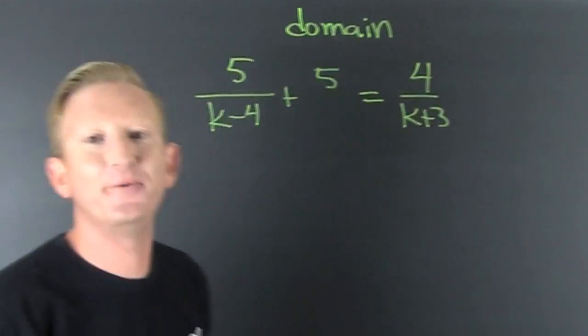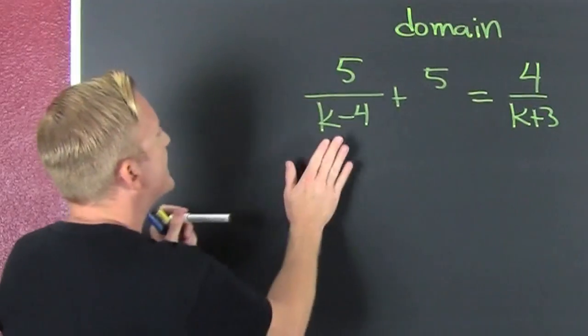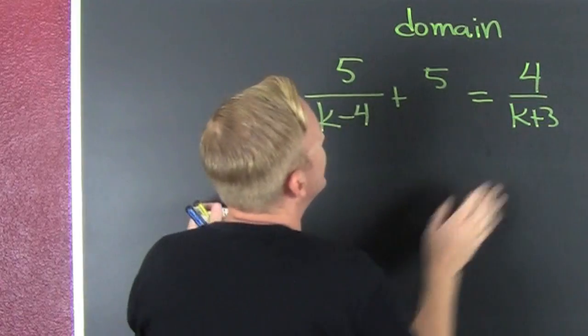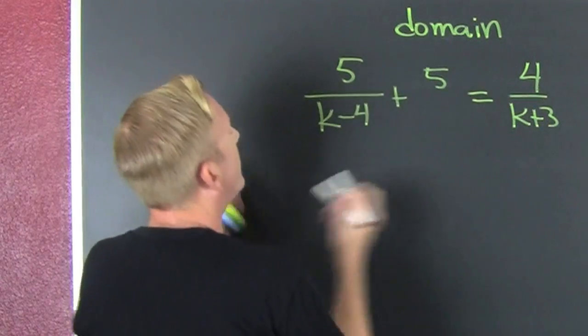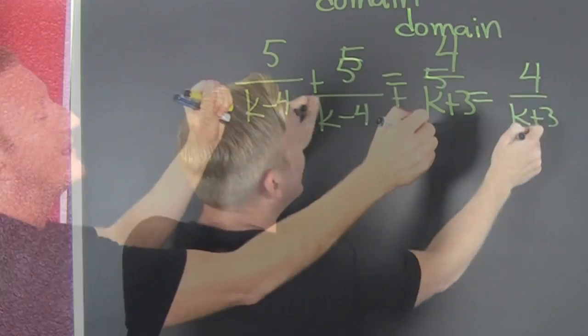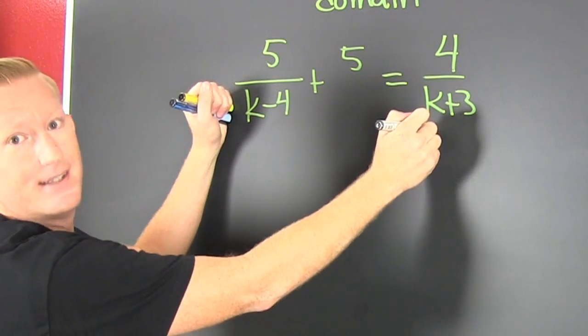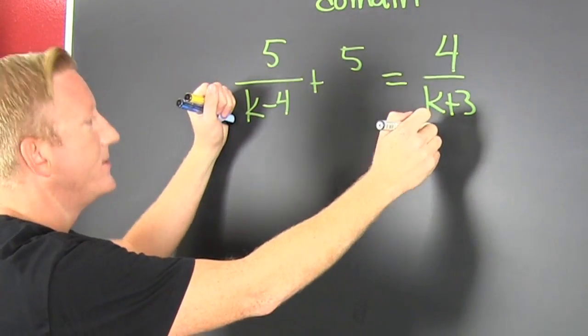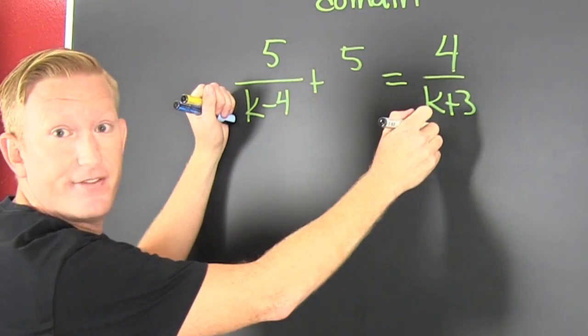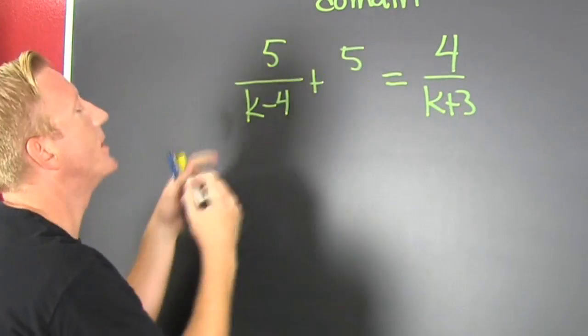You can never divide by zero. So we need to see where the denominator is going to equal zero, because you can never divide by zero.